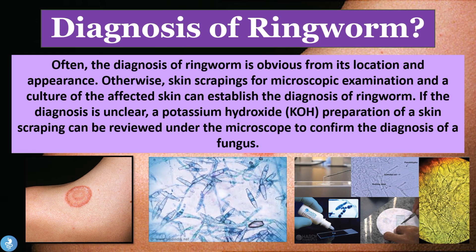Moving on, let's talk about the diagnosis of ringworm. Often the diagnosis is obvious from its location and appearance and the doctor will be able to make a clinical diagnosis. Otherwise, skin scrapings for microscopic examination and a culture of the affected skin can confirm the diagnosis. If the diagnosis is unclear, a potassium hydroxide preparation of skin scraping can be viewed under the microscope to confirm the presence of a fungus.